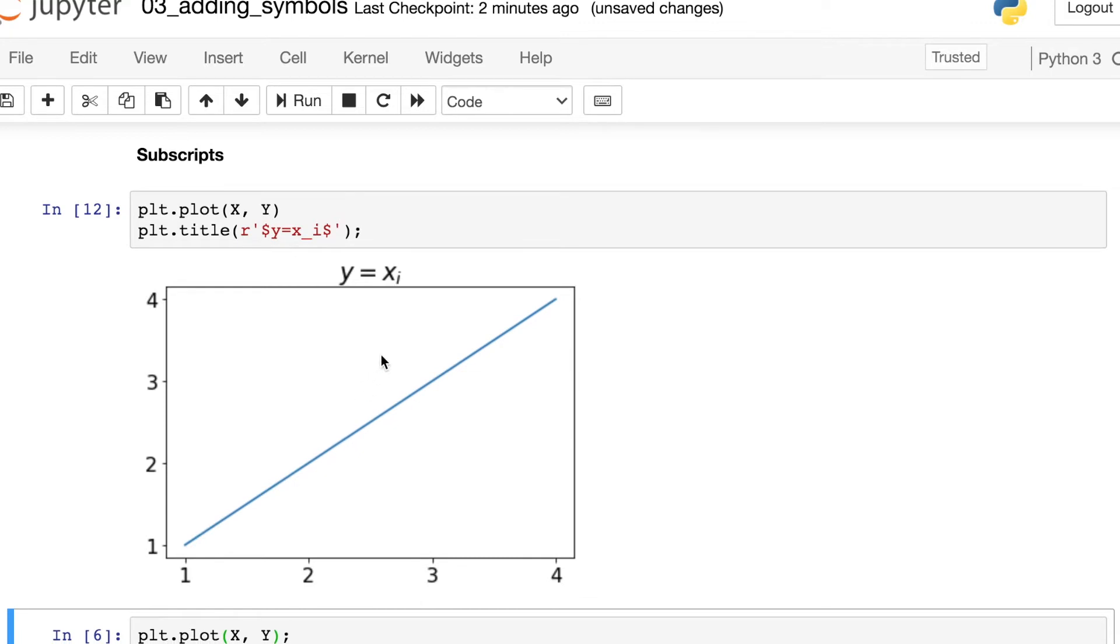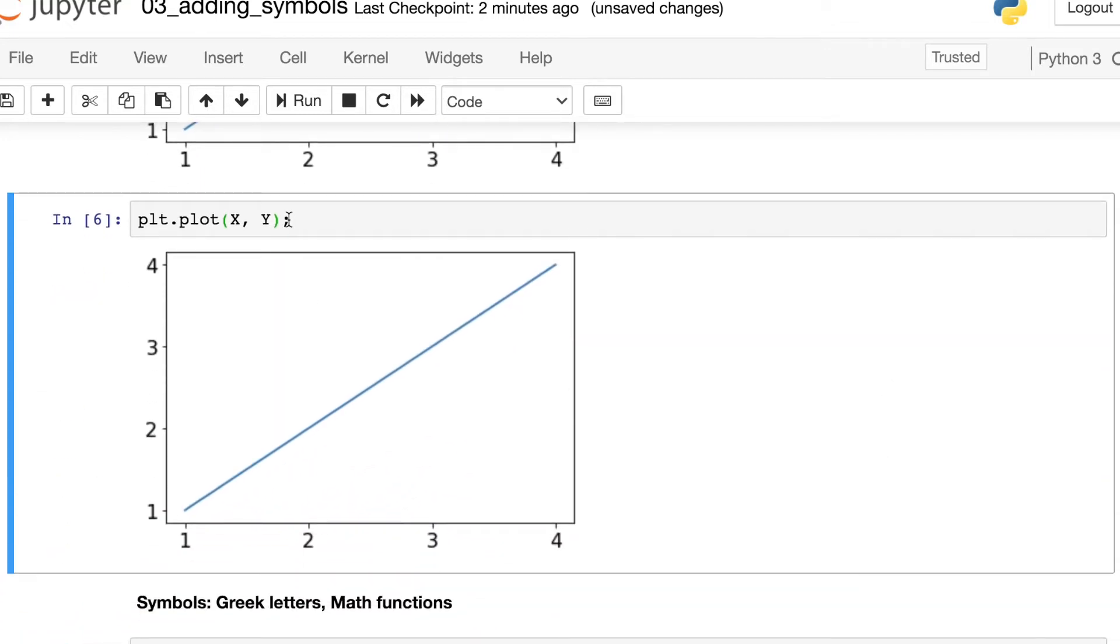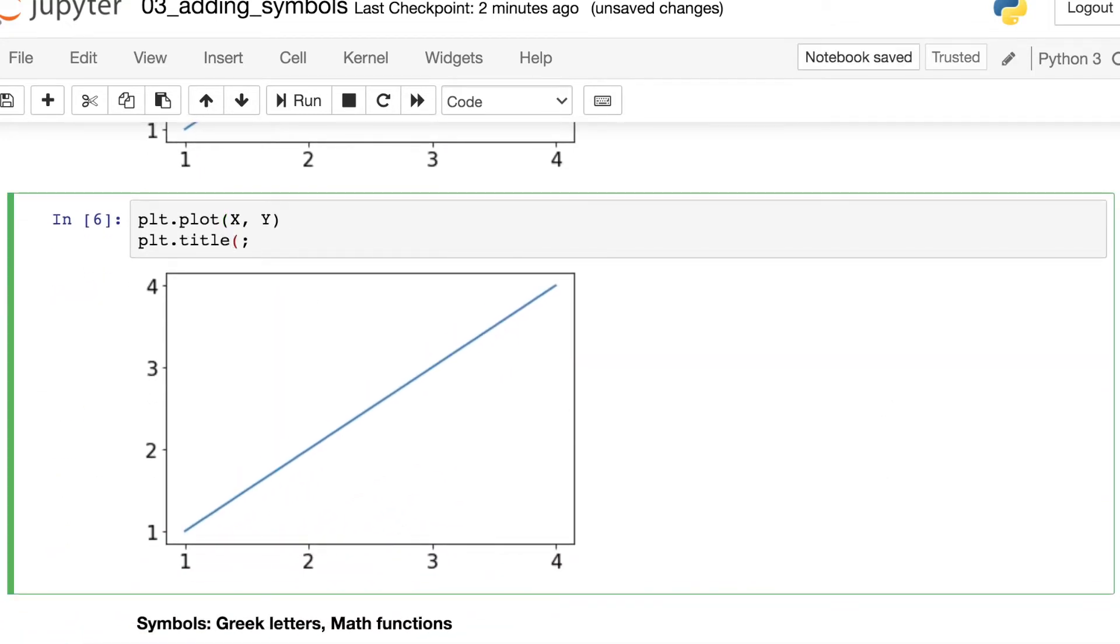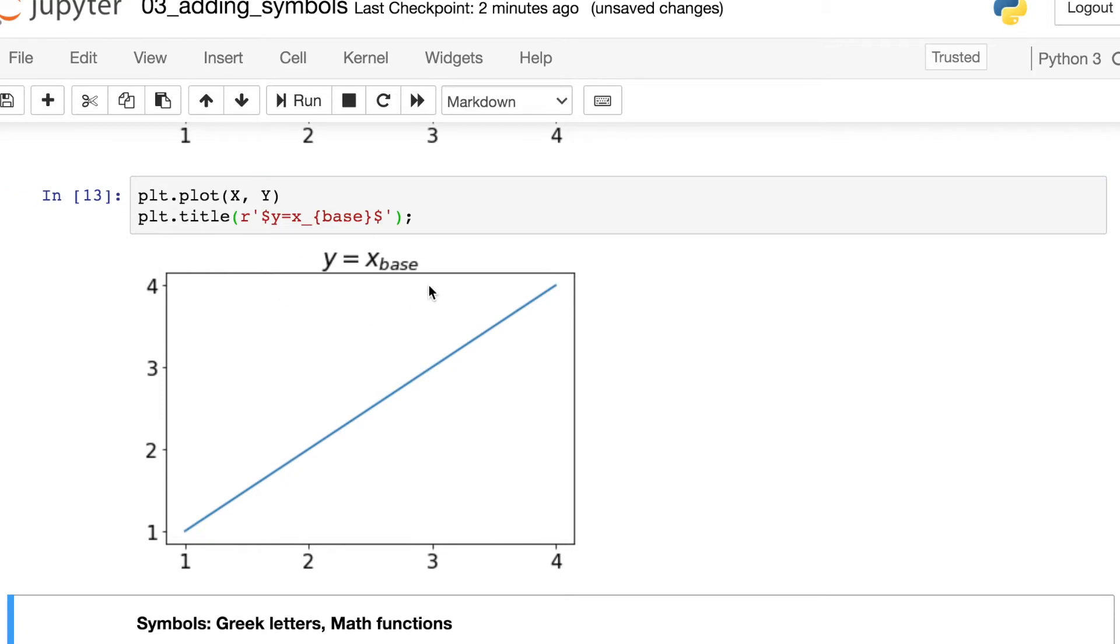where we used the underscore to signify to TeX that that I should be printed out as a subscript. And what happens if you actually want to use a whole word or phrase as your subscript? What you can do in TeX now is still use the underscore, but you should surround your phrase with a set of curly braces.